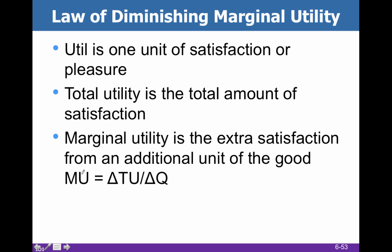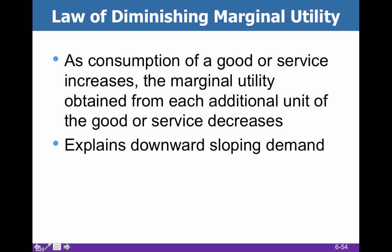Mathematically, marginal utility equals the change in total utility divided by the change in quantity. Generally, the change in quantity is 1, which means we have some number over 1. So it can be tempting to think that marginal utility just equals the change in total utility. But remember, if you have a denominator of, say, 2, then that's going to look different. Don't get lulled into a false sense of security because so many examples have the change in quantity of 1.